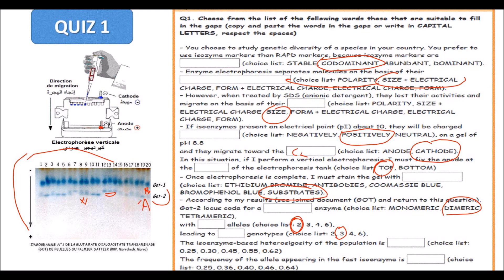The frequency of the allele appearing at the fast isozyme - the allele frequency of the fast enzyme. Fast enzyme is at the bottom. So this frequency, if you make the calculation, will give a value about 0.64.